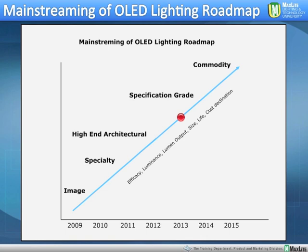We're just now seeing a broad array of high-end architectural fixtures entering the marketplace. Cost is a little prohibitive for everyday general lighting, but it's always a first step with new lighting technologies. Where we are today is probably somewhere between high-end architectural and commodity. We foresee a commodity coming in the next two to four years, where commercially available substrates and sheets of organic light-emitting diode materials will be available for manufacturers like MaxLight to retrofit and build into everyday general lighting luminaires and fixtures. So another year or two before we're out there pushing OLED products as a primary light source.